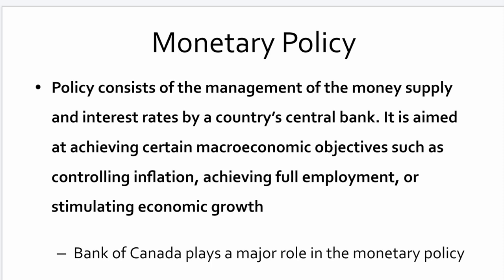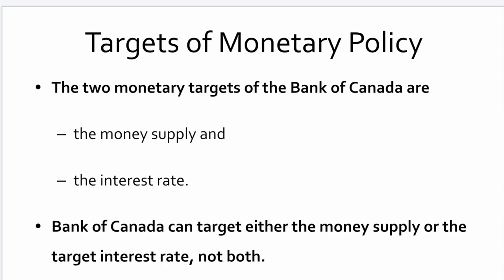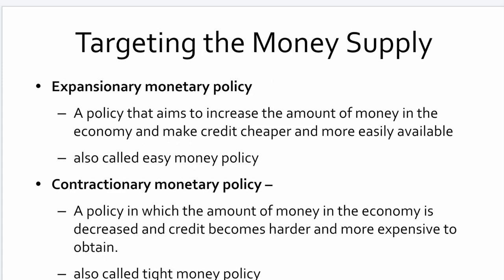Monetary policy is aimed at achieving certain macroeconomic objectives such as controlling inflation, achieving full employment, or stimulating economic growth. The Bank of Canada plays a pivotal role in monetary policy, which is at the behest of government. There are really two monetary targets: the money supply and the interest rate. The Bank of Canada can target either the money supply or the target interest rate, but not both. We call these changes expansionary or contractionary monetary policies.